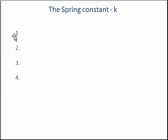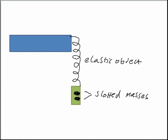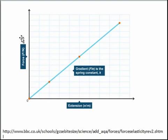The spring constant is different for all materials, which is a bit confusing because it's called a constant — you might think it's the same. But it is different for all materials; it is constant only if you're using the same material in different experiments, which is why it's called a constant. It's worked out using an experiment like this one: you have an elastic object hanging off a desk, and you slot masses or weights onto the end of the elastic object. These apply more downward force, which causes the object to stretch more. You measure the length after each slotted mass has been added and plot a graph, where force is proportional to the number of slotted masses added, and the extension is the length by which the elastic object increases.